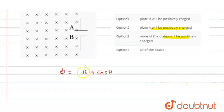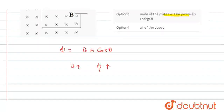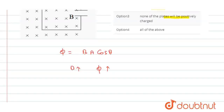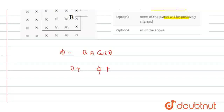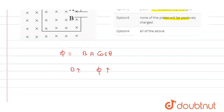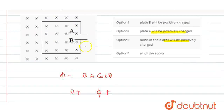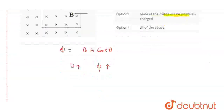If the magnetic field increases, then flux will increase. And when flux increases, an induced EMF and induced current will be produced.